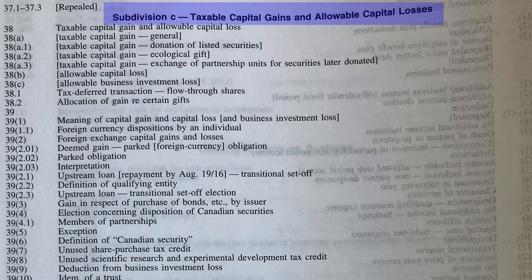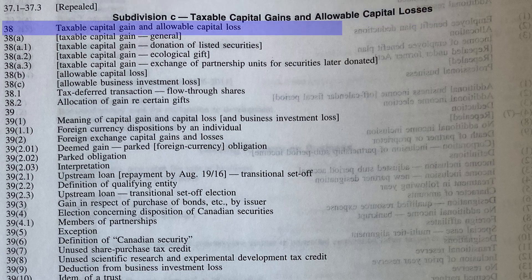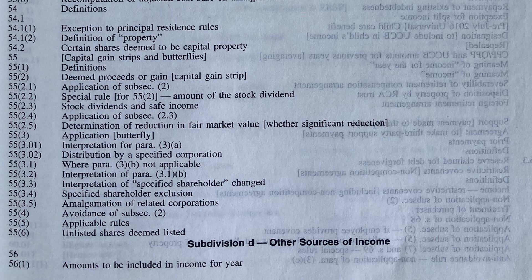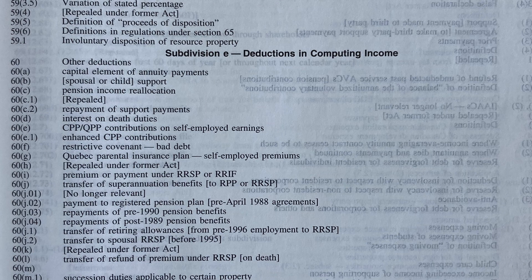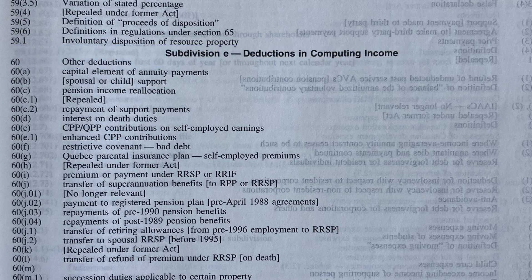Subdivision C begins with Section 38, and it's where the concept of taxable capital gains and allowable capital losses are dealt with. Subdivision D begins at Section 56 and relates to other sources of income. Finally, Subdivision E begins at Section 60 and relates to deductions in computing income — deductions not already mentioned.